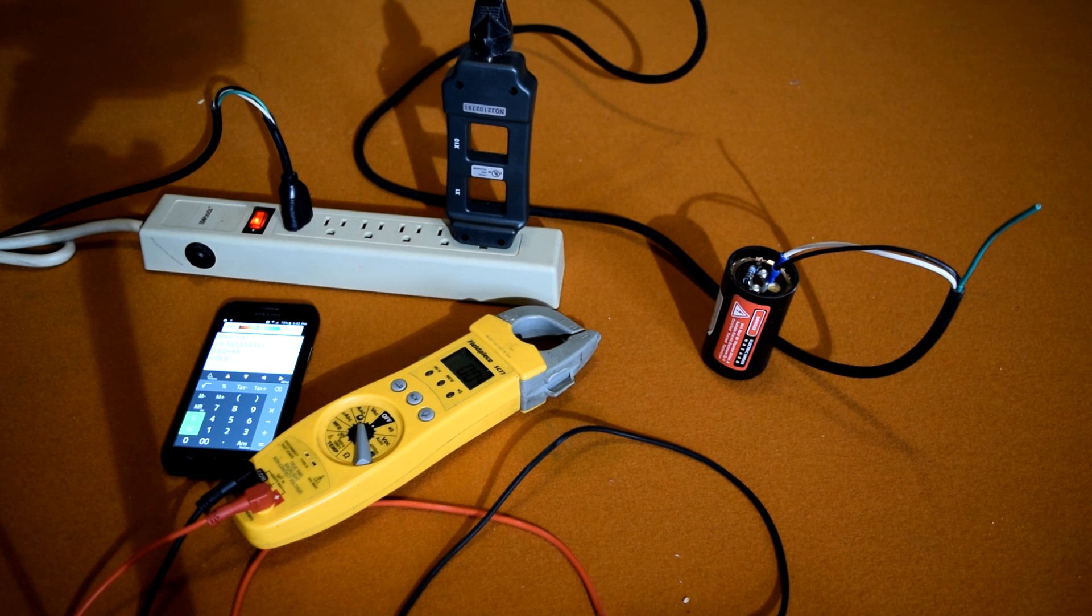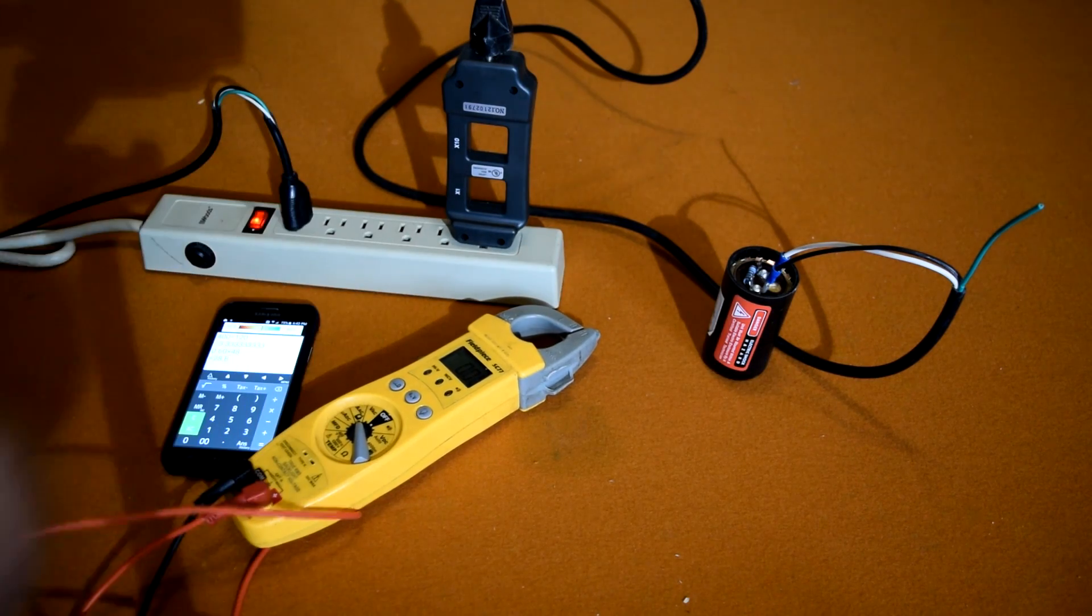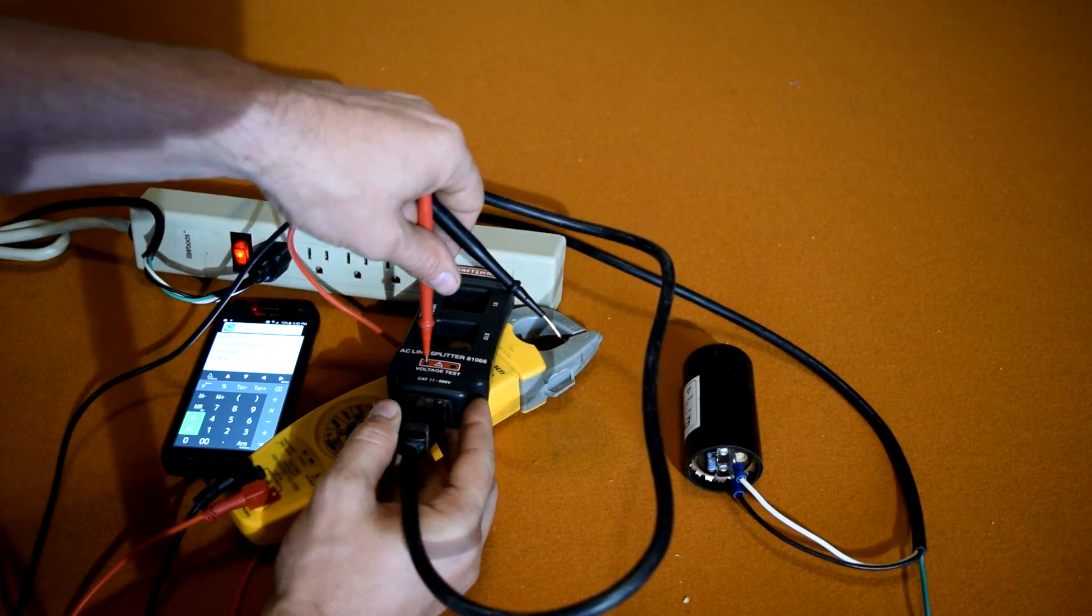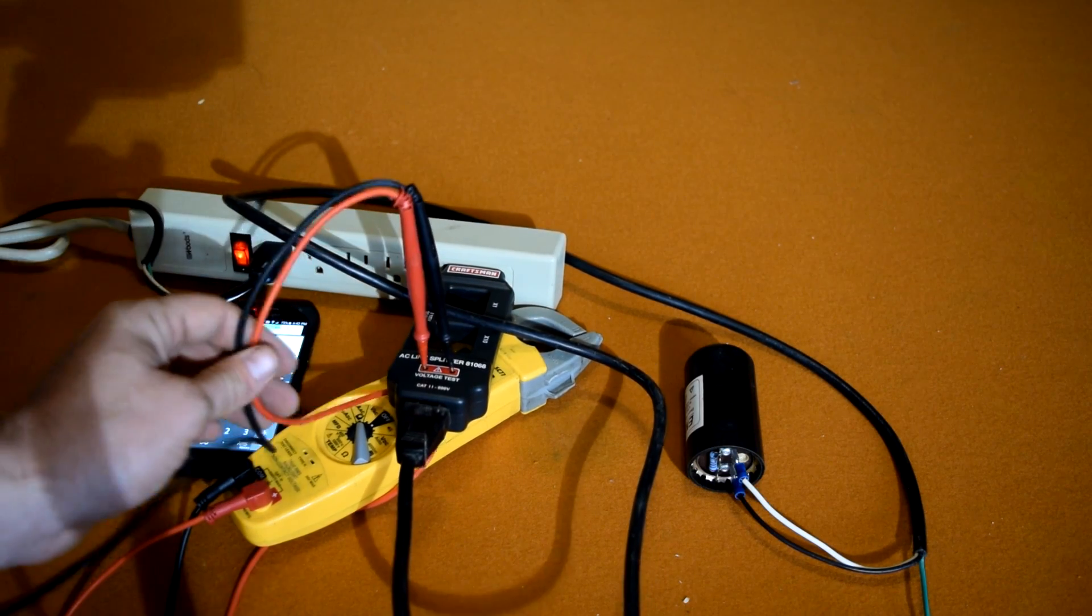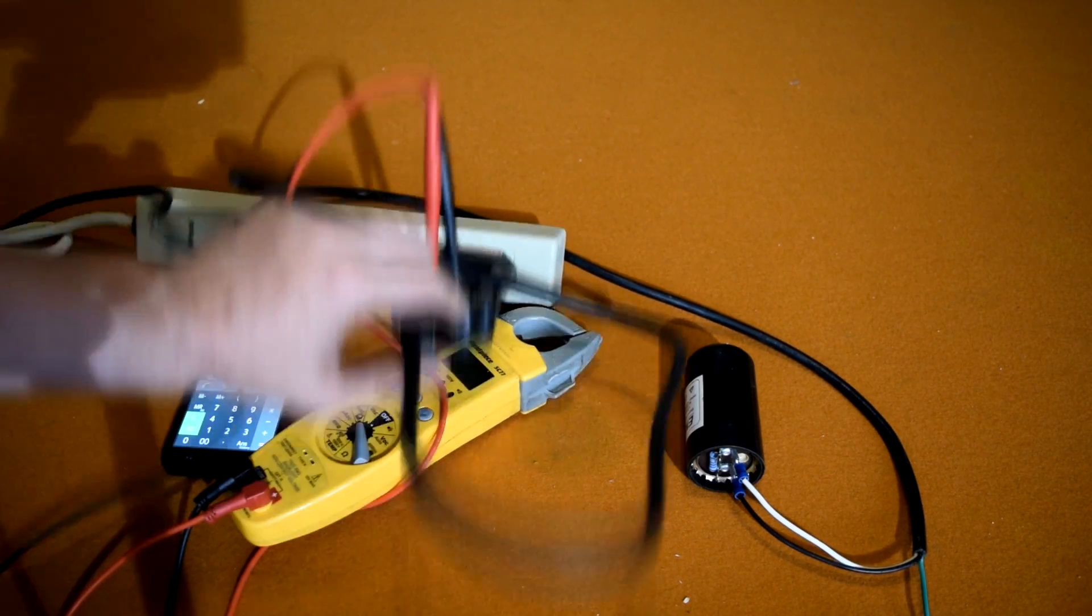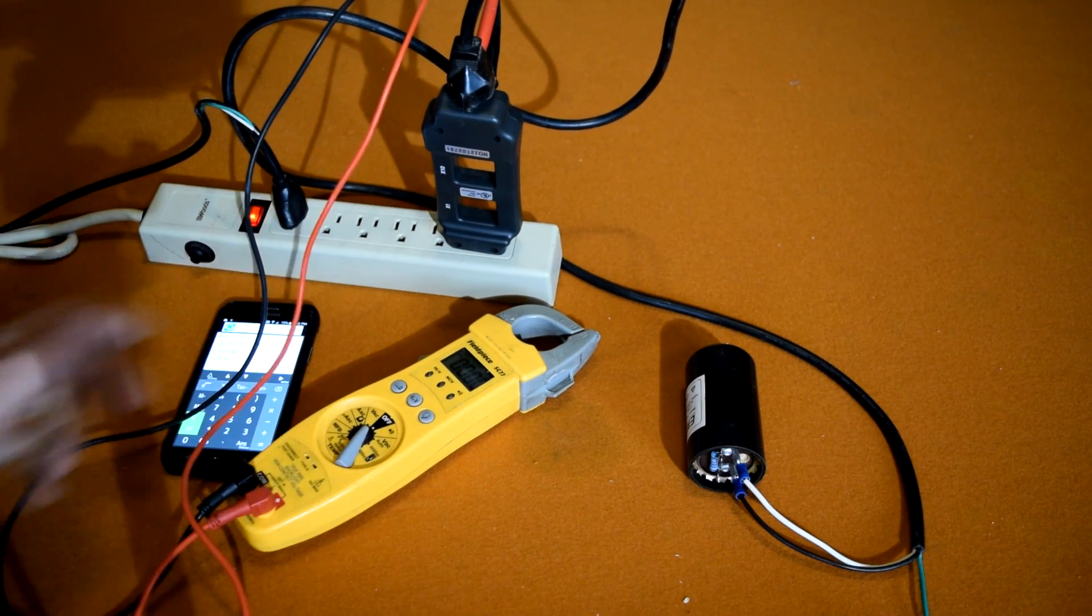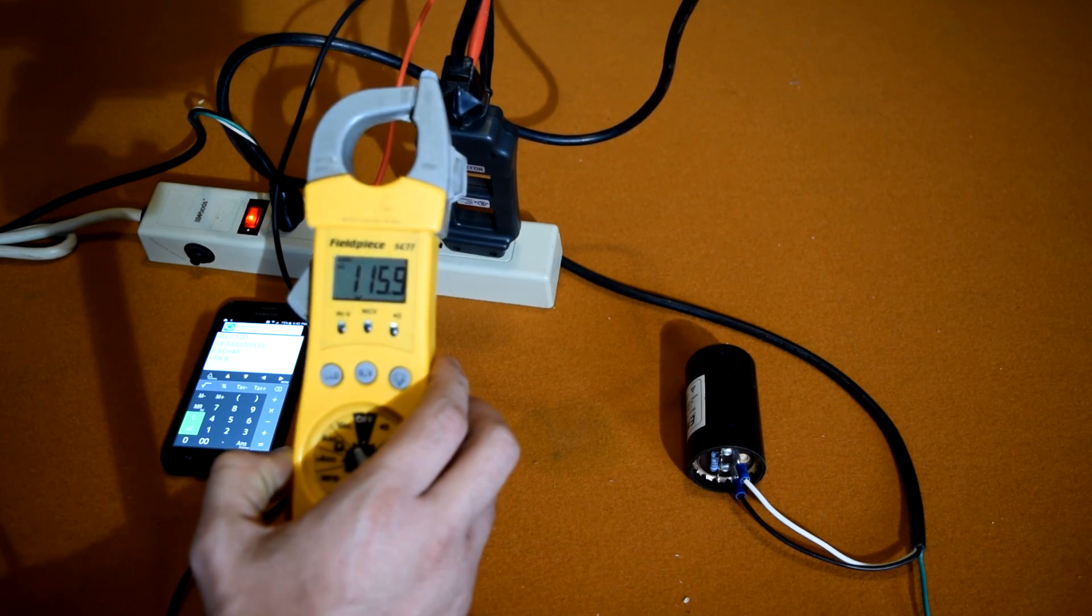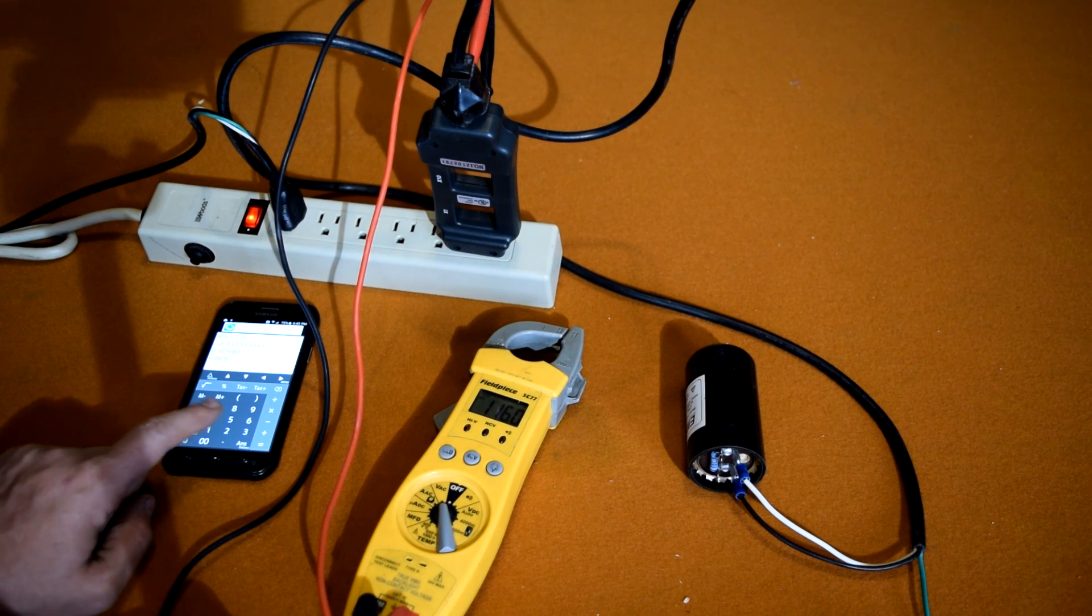You would say okay, 0.5 amps, that's nothing, no big deal. But then you come over here and do a quick test of the voltage. You've got a voltage test for your test leads right here. Once you get your two voltage test leads in, you flip it over and it shows 116 volts.